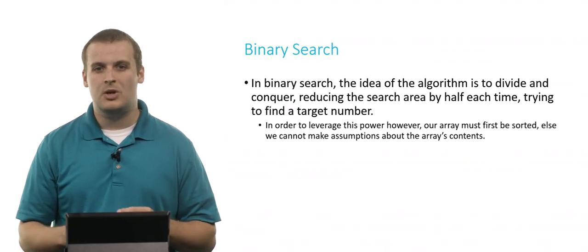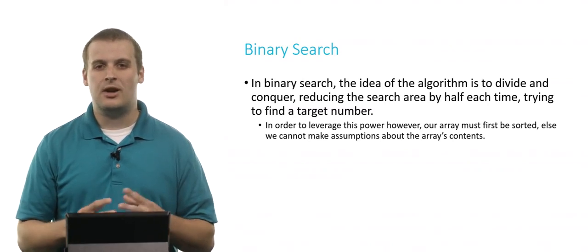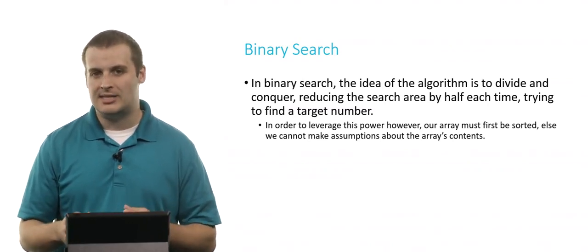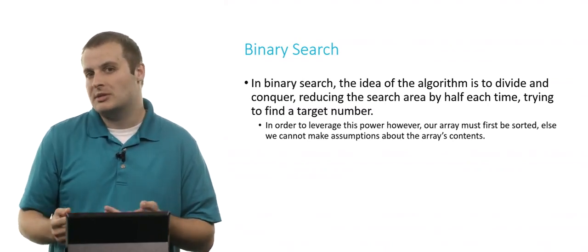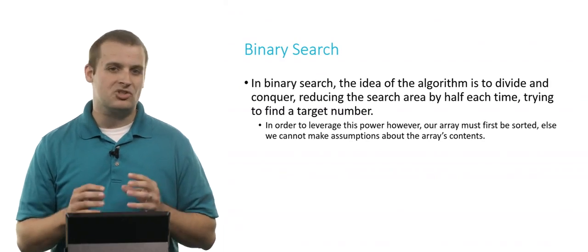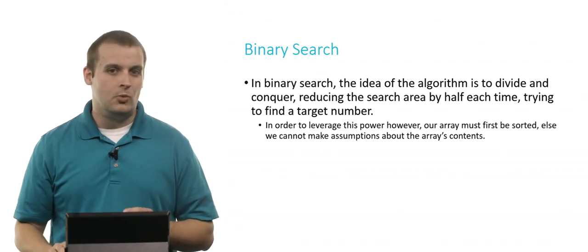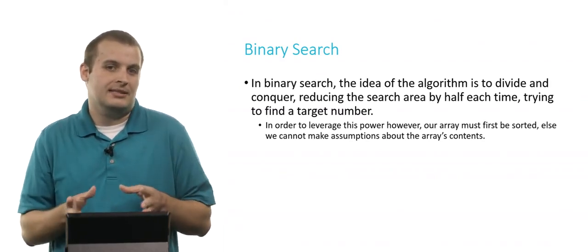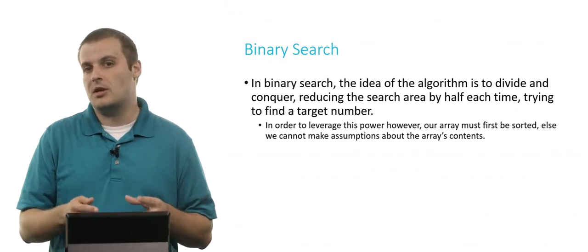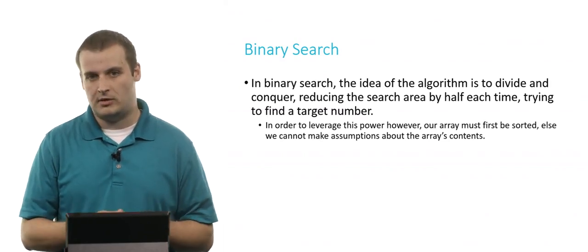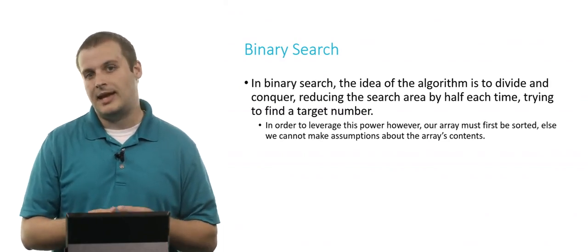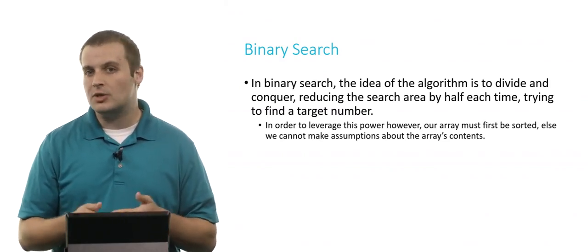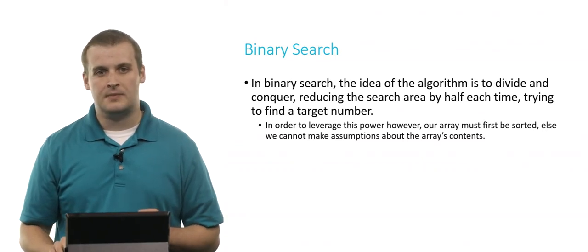If the array is a complete mix-up, we can't just discard half of the elements, because we don't know what we're discarding. But if the array is sorted, we can do that, because we know that everything to the left of where we currently are must be lower than the value we're currently at, and everything to the right must be greater than the value we're currently looking at.